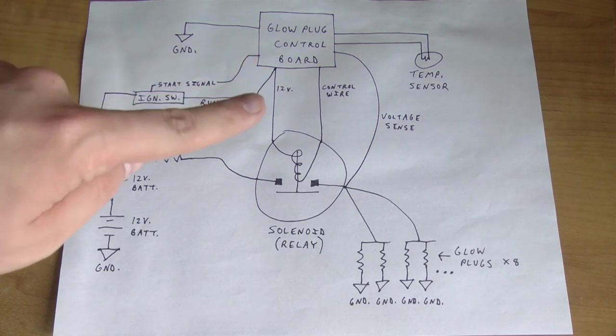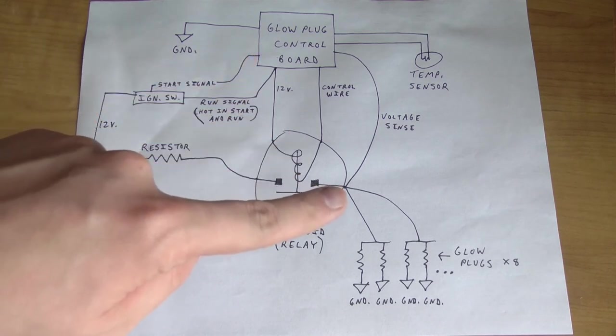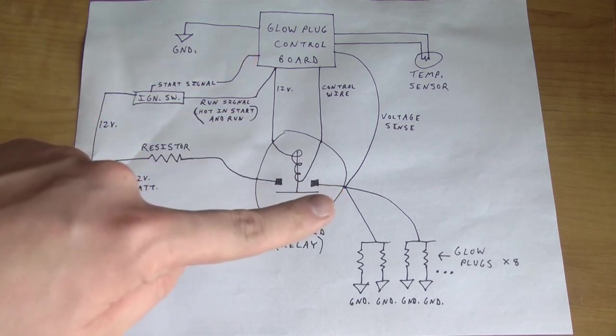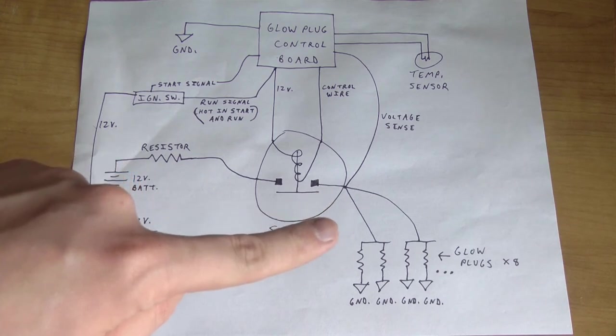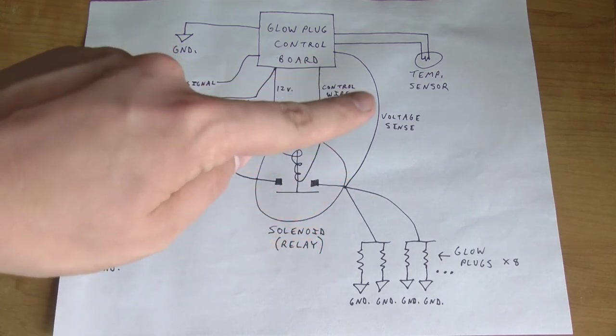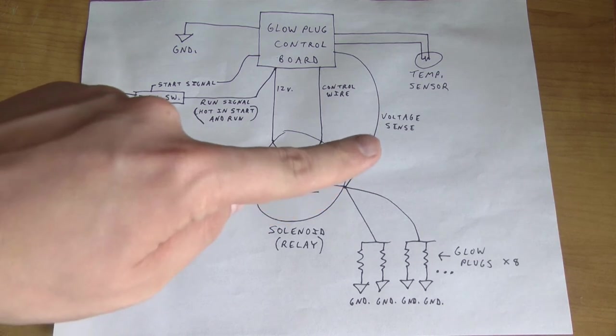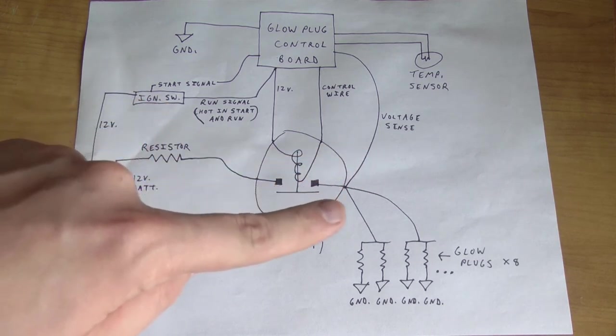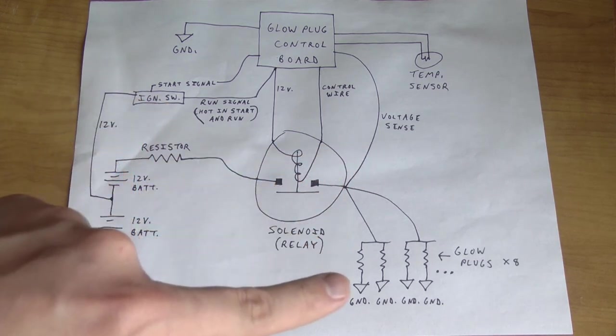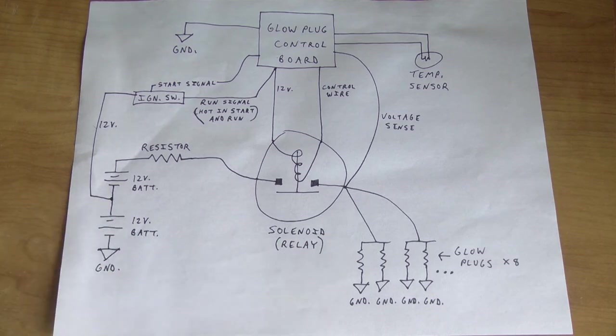So this glow plug control board monitors the voltage after the resistor and when it activates the solenoid, it checks that voltage to make sure it's within proper parameters. If that voltage is too high, it'll turn the solenoid right back off to protect the rest of the glow plugs. So if you turn the key on and the wait to start light comes on and goes right back out, that's one of the things to look at.